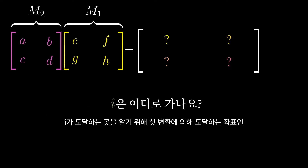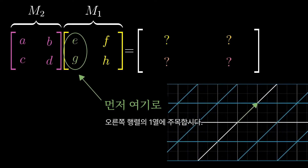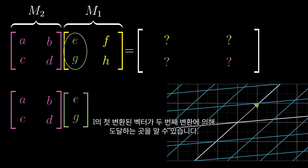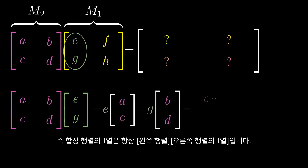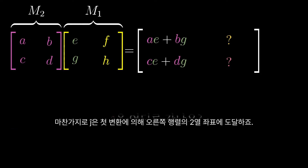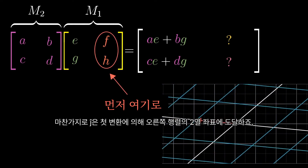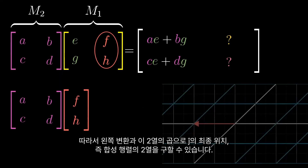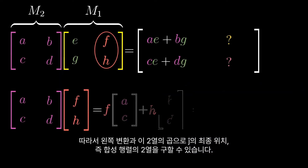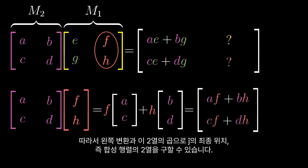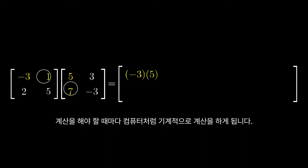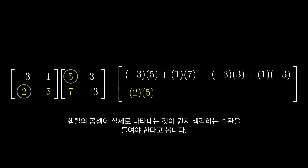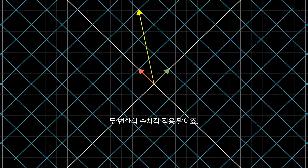To follow where i-hat goes, start by looking at the first column of the matrix on the right, since this is where i-hat initially lands. Multiplying that column by the matrix on the left tells you where the intermediate version of i-hat ends up after applying the second transformation. So the first column of the composition matrix will always equal the left matrix times the first column of the right matrix. Likewise, j-hat will always initially land on the second column of the right matrix, so multiplying the left matrix by this second column gives its final location — and hence that's the second column of the composition matrix. There are a lot of symbols here, and it's common to be taught this formula as something to memorize along with an algorithmic process to help remember it.